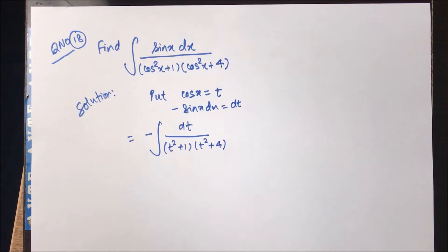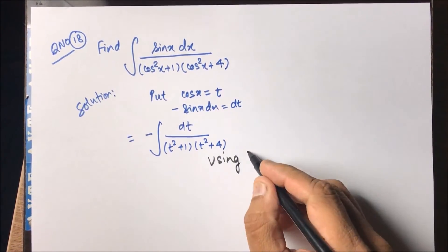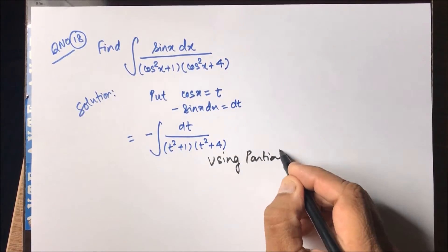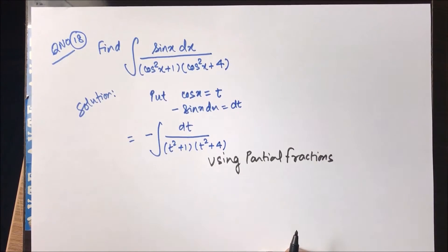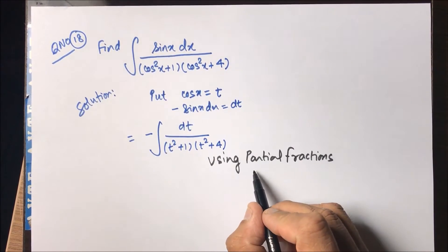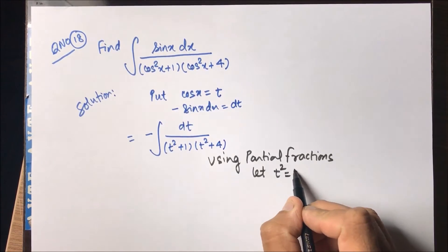Now what? If we apply partial fraction for non-linear non-repeating factors it will be a very lengthy task. So what you can do using partial fractions, within partial fractions, you can substitute without changing the respect. We take let t square is equal to y.